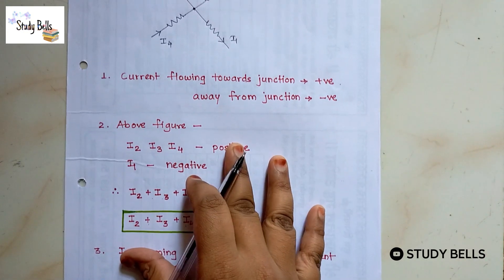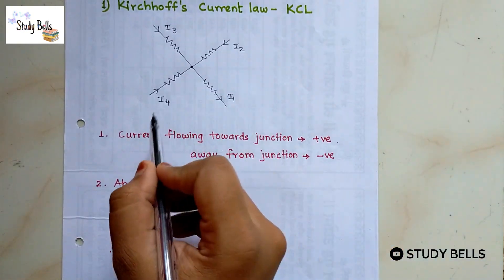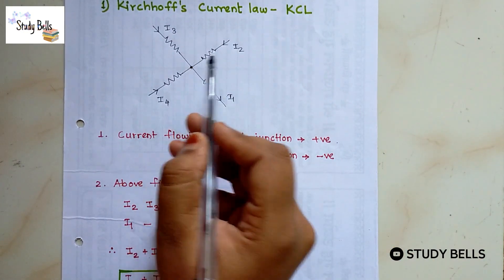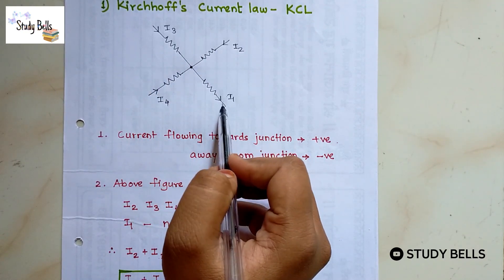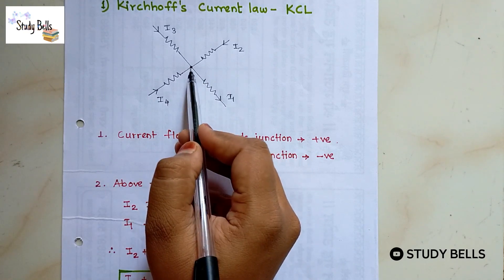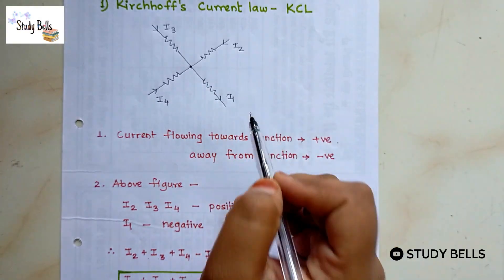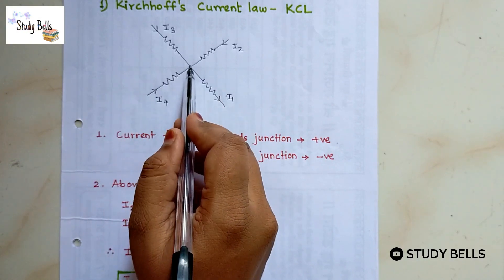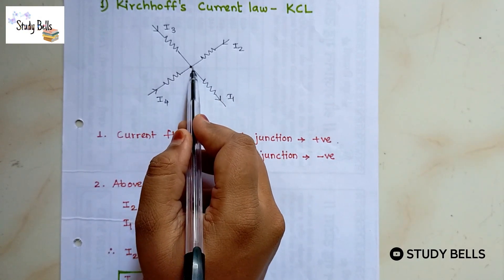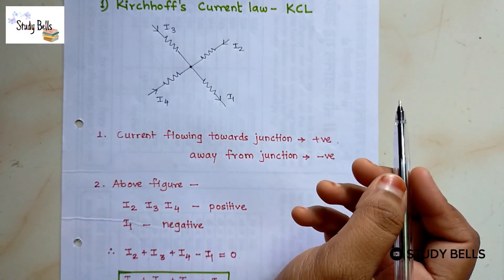So what Kirchhoff's law said at the junction point sum of incoming current is equal to sum of outgoing current. If here 5, 6, 7, any number of branches taken the sum of incoming current to this junction is always equal to the sum of outgoing current through this junction.